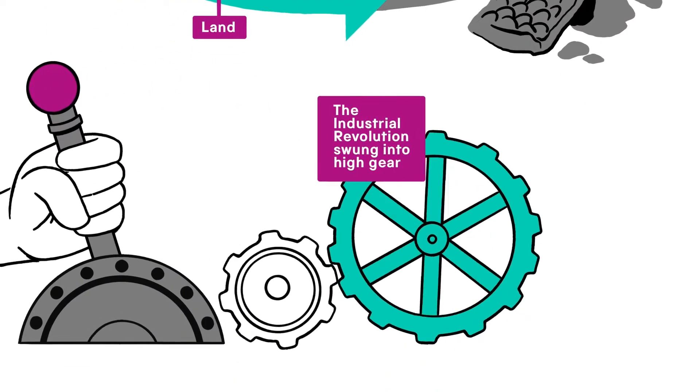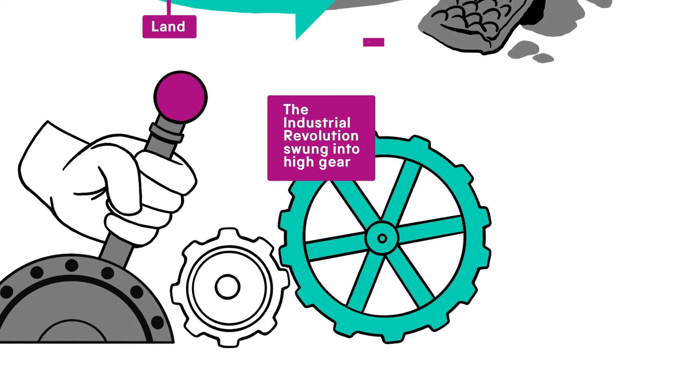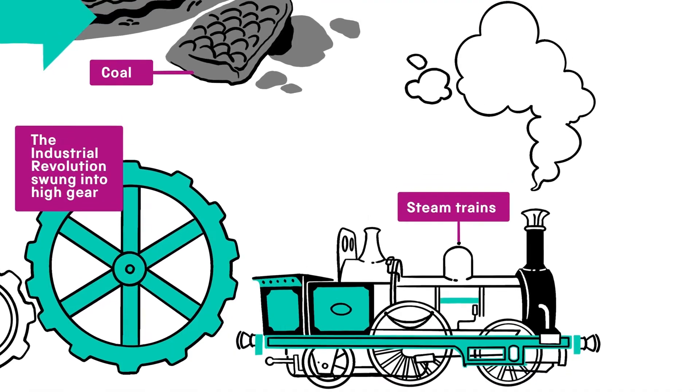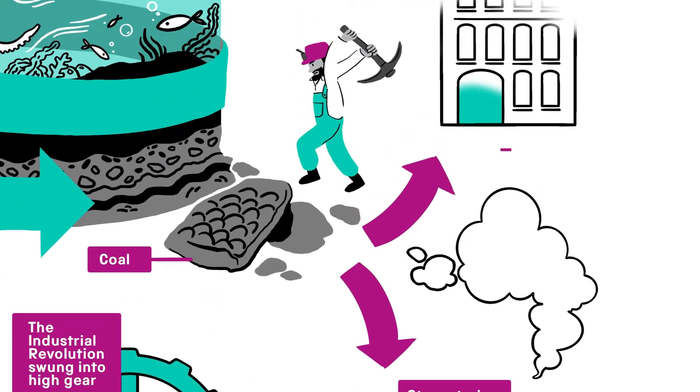In the 18th century, the Industrial Revolution swung into high gear. We dug up and burnt coal, unlocking this ancient store of carbon to power steam trains, factories and homes.